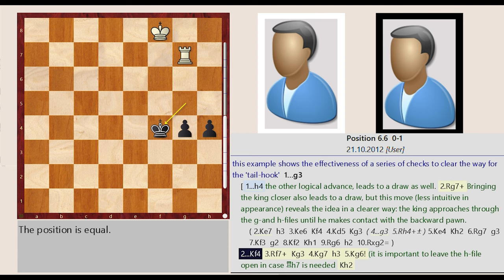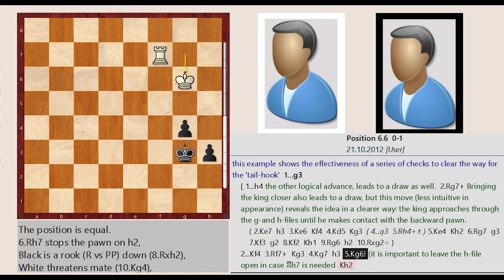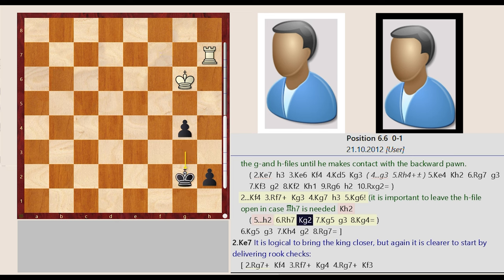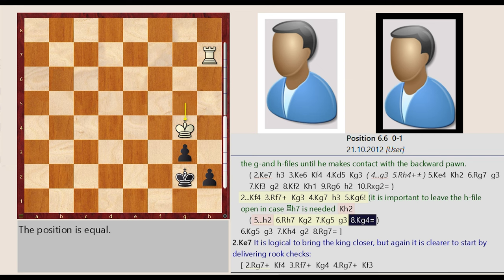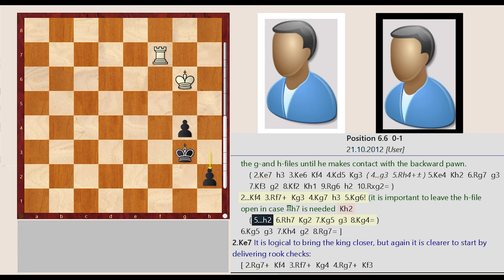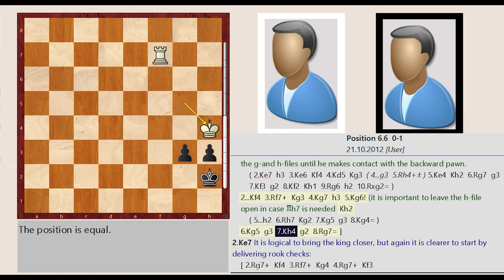King g5 f4, Rook g7 f7, King f4 g3, King f8 g7, h4 h3, King g7 g6. It is important to leave the h file open in case h7 is needed. H3 h2, Rook f7 h7, King g3 g2, King g6 g5, g4 g3, King g5 g4, King g3 h2, King g6 g5, g4 g3, King g5 h4, g3 g2, Rook f7 g7.